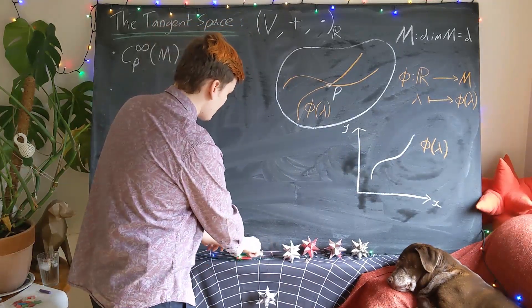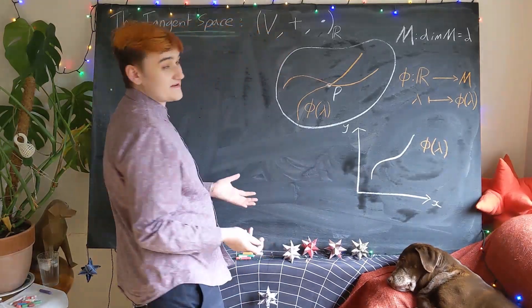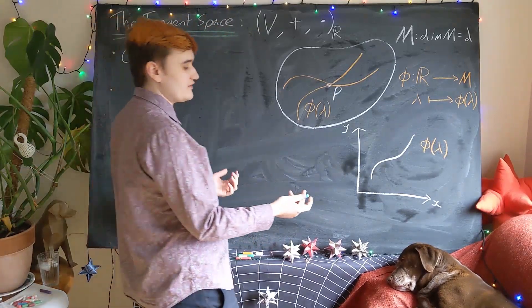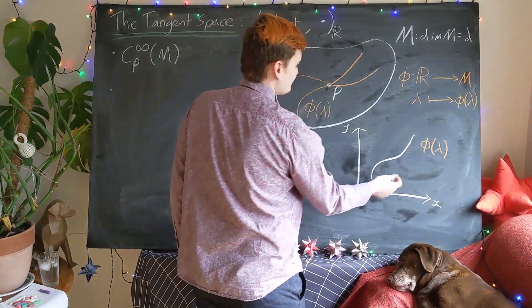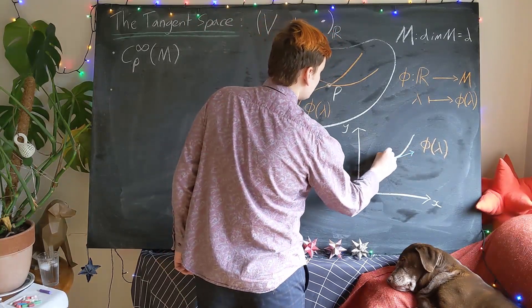But now you should already realize or be able to guess how we're going to be able to form vectors or rather tangent vectors from this curve. All we need to do is take the parameter derivative,